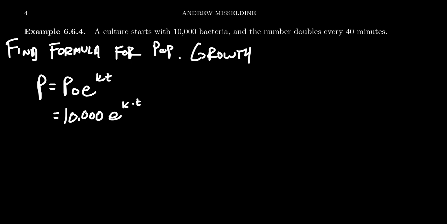Now, we also know that it doubles every 40 minutes. So if we measured time in minutes, because this thing grows pretty rapidly, what we could say is 40 minutes later, the population will be doubled. It's going to be 20,000. And then we could solve for k in this situation.